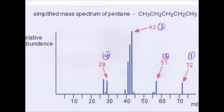At 43, now that is 14 less, 12 plus 2. So another CH2 has been knocked off. And at 29, the same. So that's roughly how it works.